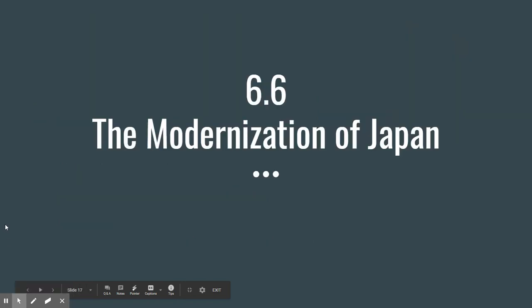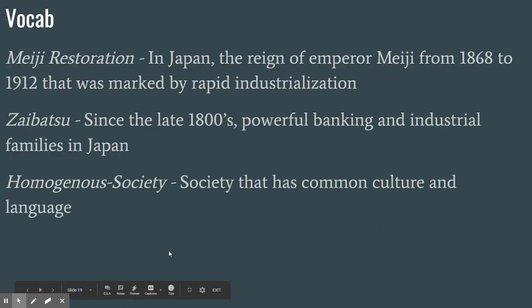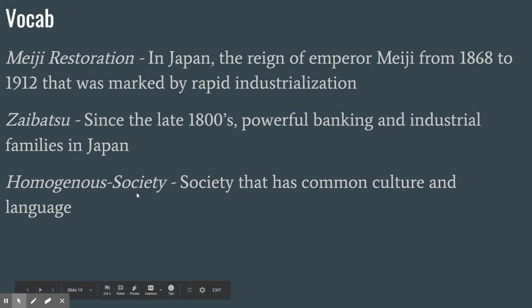Now we turn to Japan. To summarize China: it failed to modernize and collapsed. Japan is going to do the exact opposite — embrace modernization and form its own imperial empire. Key vocabulary: the Meiji Restoration is the most important term, referring to the reign of Emperor Meiji from the mid-1860s to the 1910s. A Zaibatsu is a super-rich, powerful family in Japan important to industrialization. A homogeneous society is one where most people share the same culture, language, and religion — Japan is an example, being nearly 100% Japanese even today, in contrast to the United States, which is a heterogeneous society.